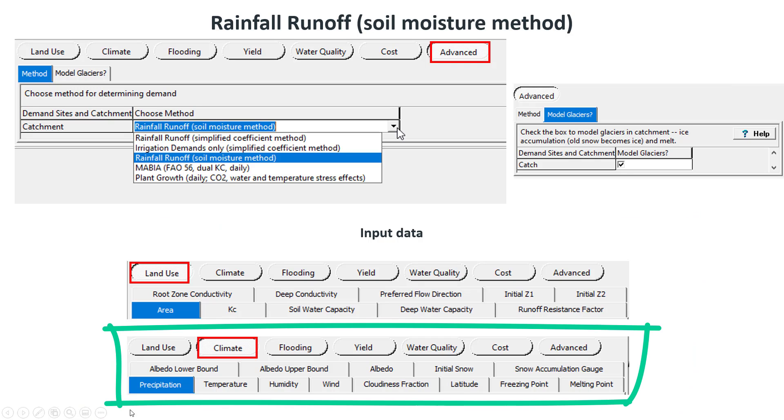Precipitation, mean temperature, humidity, wind speed at two meters high, cloudiness fraction, latitude, freezing point, melting point, and albedo must be entered under the climate tab.